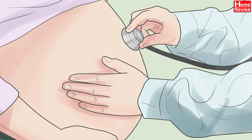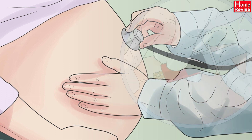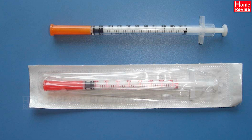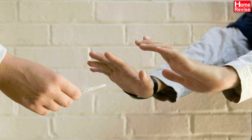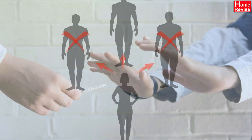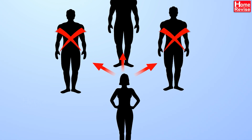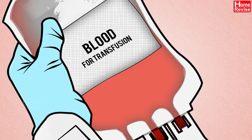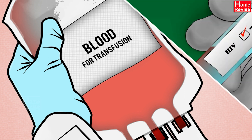Prevention methods: 1. Pregnant women should be routinely counselled and voluntarily tested for HIV. 2. Use of a new sterile needle or syringe with each injection remains the safest practice. 3. Say no to drugs. 4. Avoid intimacy with more than one partner. 5. Use of condoms. 6. Before transfusion, blood should be tested for HIV.